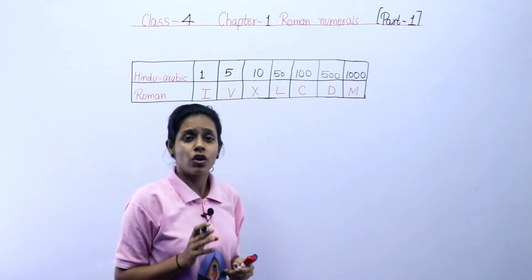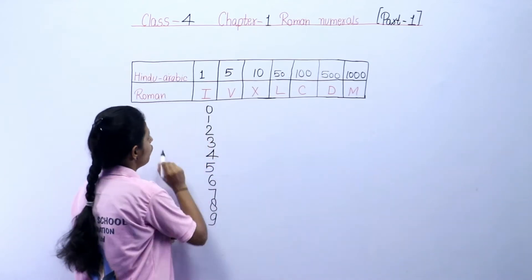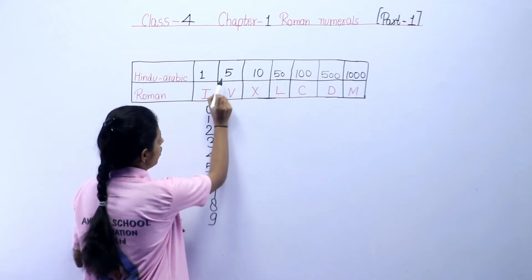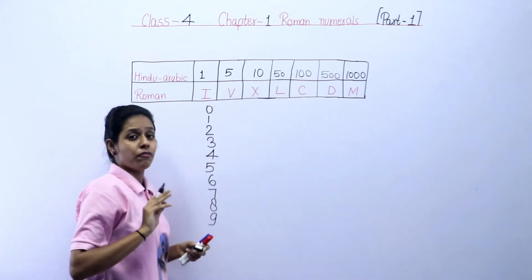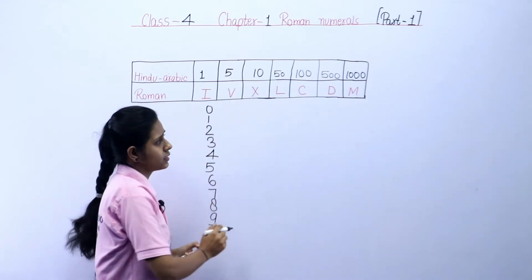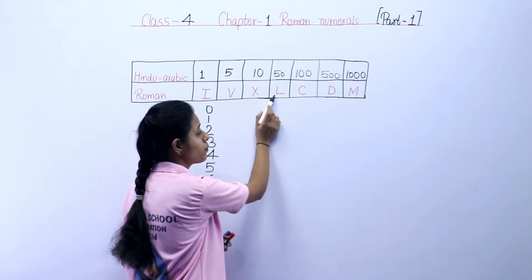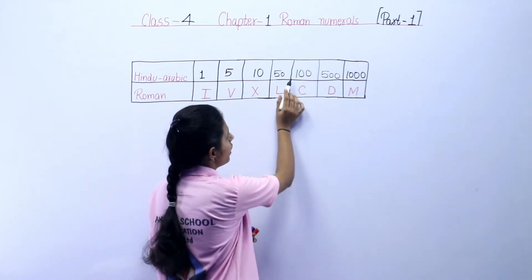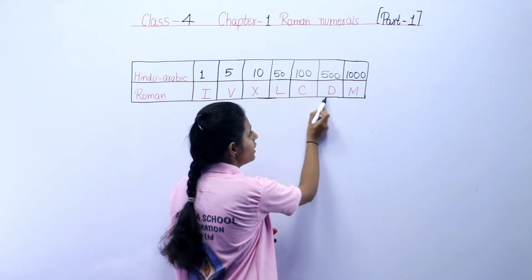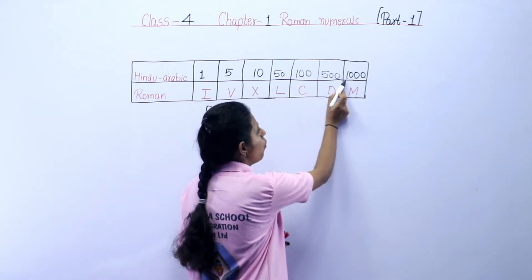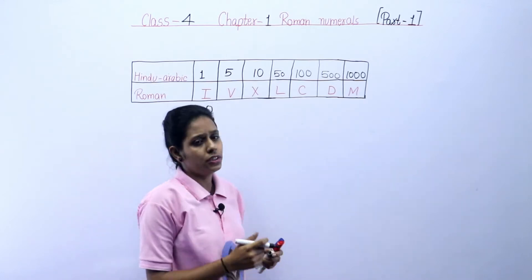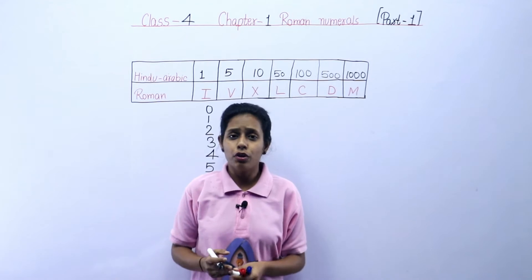Romans used English alphabet letters to write numbers. For writing 1, they use I. For 5, they use V. For 10, X. For 50, L. For 100, C. For 500, D. And for 1000, M. They use these symbols to write the numerals.